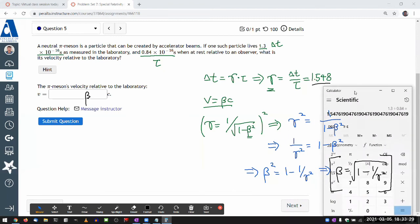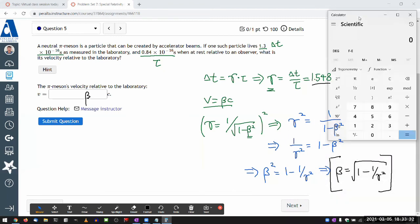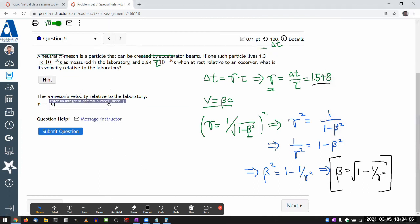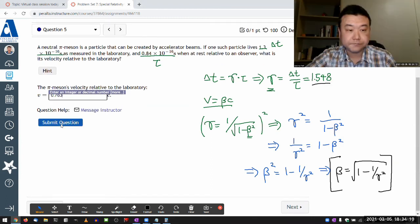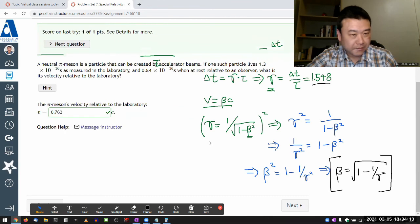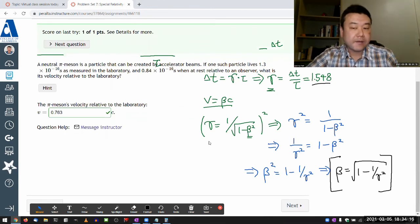The further we go into special relativity, the more circumstances you will see where we specify speed by specifying gamma rather than beta. This question is the very first example of it. What the question is asking for is basically beta. Once you've worked out enough to figure out gamma, you can get beta by putting gamma through this expression. Let me do that. I need the thing under the square root: 1 minus 1 divided by gamma 1.548 squared. Close the parenthesis and take the square root. 0.763 is beta.